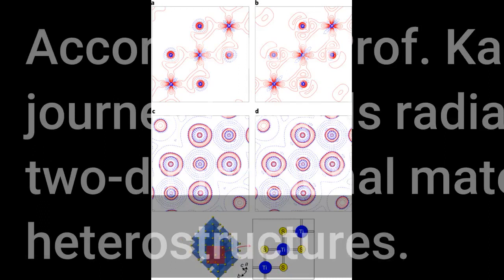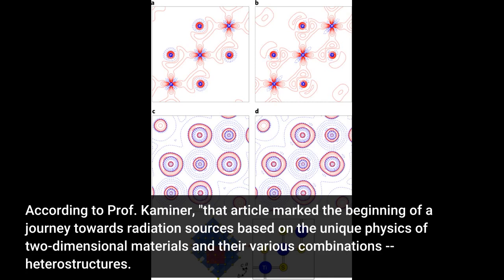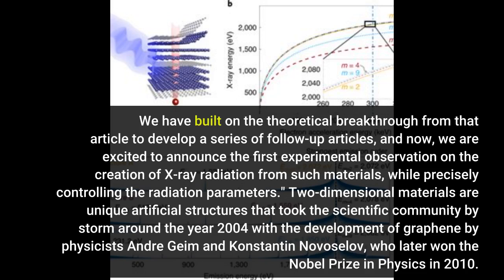According to Professor Kaminer, that article marked the beginning of a journey towards radiation sources based on the unique physics of two-dimensional materials and their various combinations, heterostructures. We have built on the theoretical breakthrough from that article to develop a series of follow-up articles, and now we are excited to announce the first experimental observation on the creation of X-ray radiation from such materials, while precisely controlling the radiation parameters.